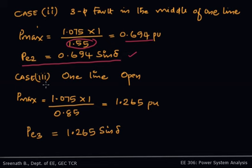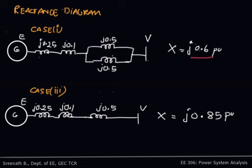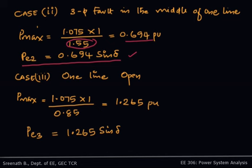For Case 3, when one line is open: the total reactance becomes 0.25 + 0.1 + 0.5 = 0.85, since that line is now open. So EV/X = 1.075 / 0.85 = 1.265, and the Case 3 equation is Pe3 = 1.265 sin δ.